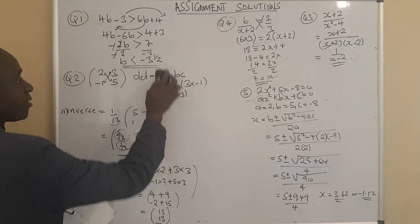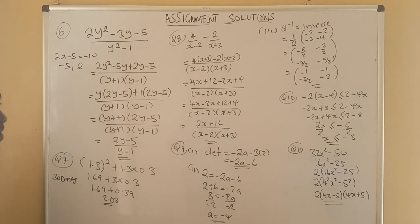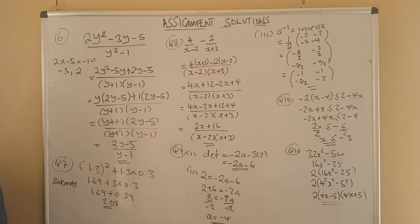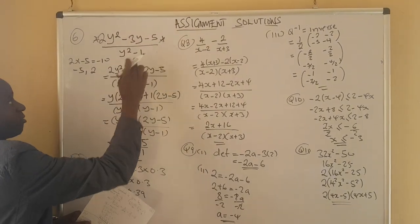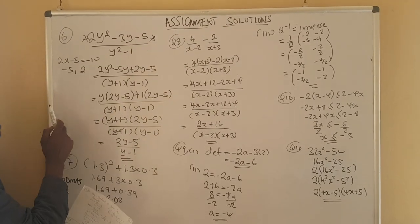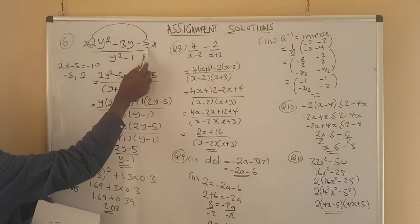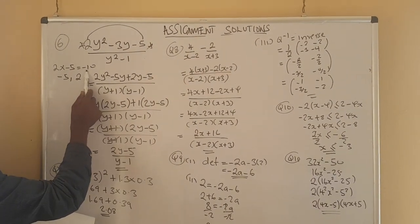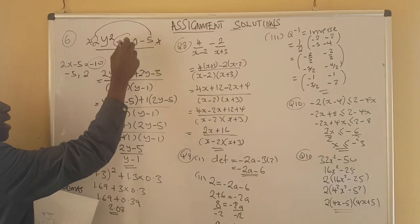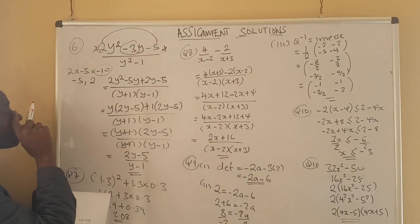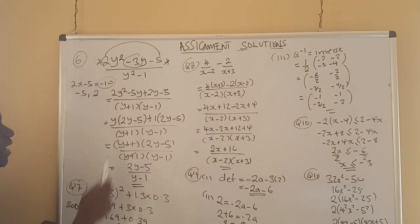Question 6 was more challenging for many students — it involved quadratic factorization and the difference of two squares. We need to factorize the quadratic part first. We multiply the first and last terms: 2 times negative 5 gives negative 10. We look for factors of negative 10 which add to give the middle term, negative 3. Those factors are negative 5 and positive 2, since negative 5 plus 2 equals negative 3.